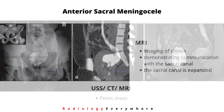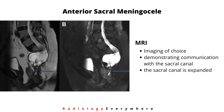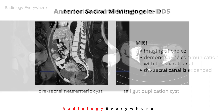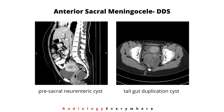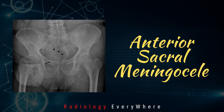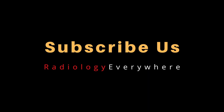On ultrasound, CT, and MRI you can see a pelvic mass. MRI is the imaging of choice and demonstrates communication between the lesion and the sacral canal. You can see the expanded sacral canal. Well-known differential diagnoses of anterior sacral meningocele are pre-sacral neuroenteric cyst and tailgut duplication cyst.